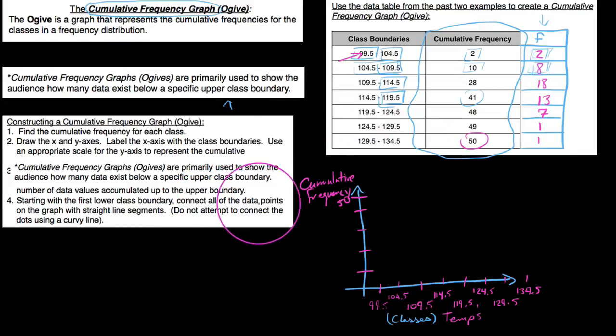It says connect all the data points on the graph with straight line segments. Now keeping in mind that an ogive is really asking the question, how many states, say in this case up until now, have temperatures 104.5 or below? The answer would be two. But now my next question is this: how many states would have a high temperature of 99.5 or below, which was our minimum? And we could say zero, nobody had anything yet.